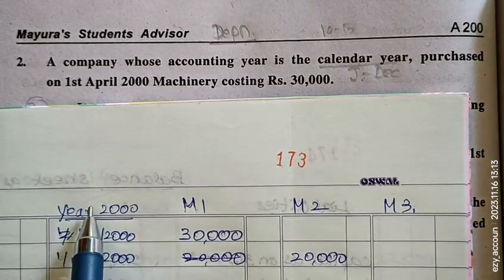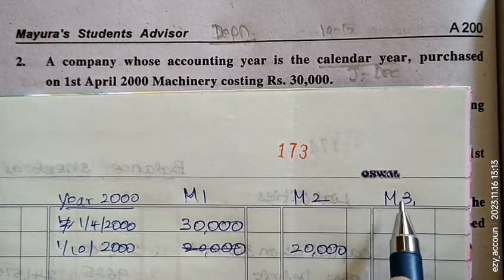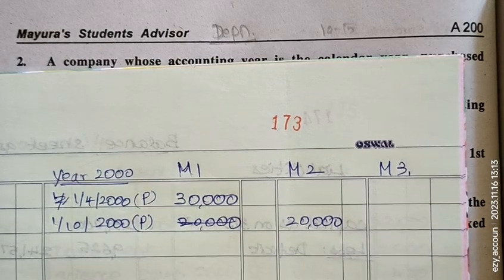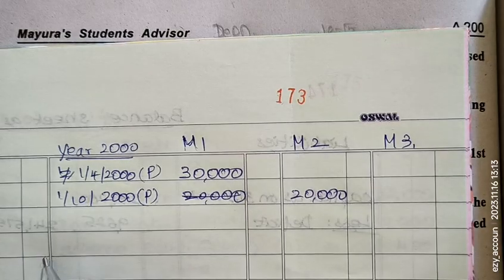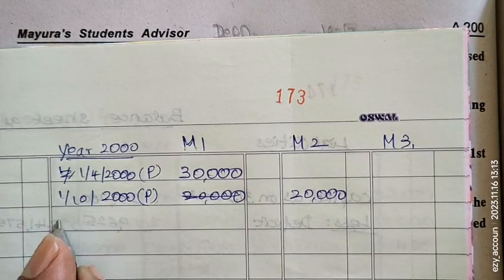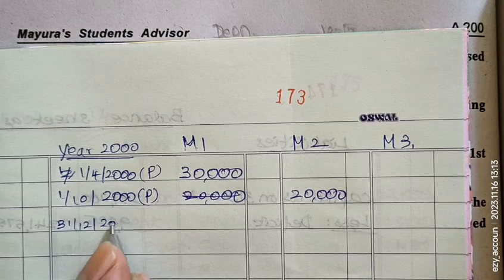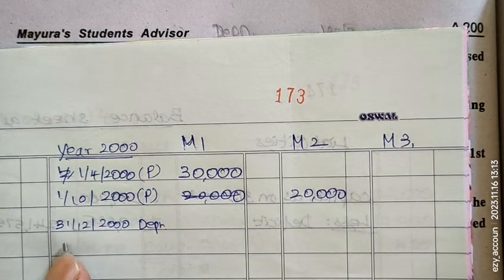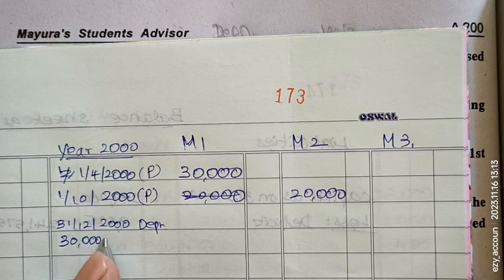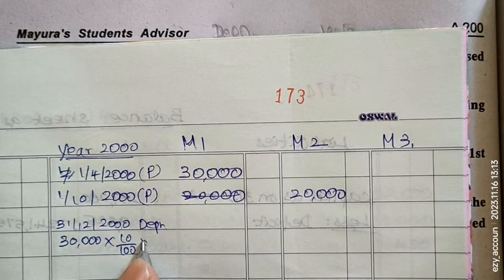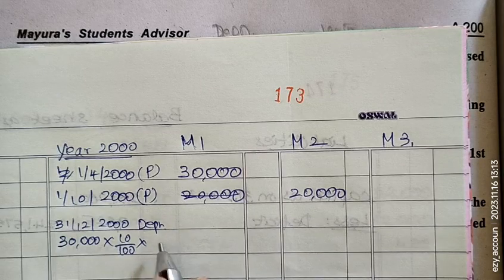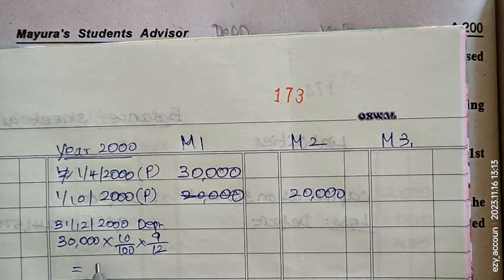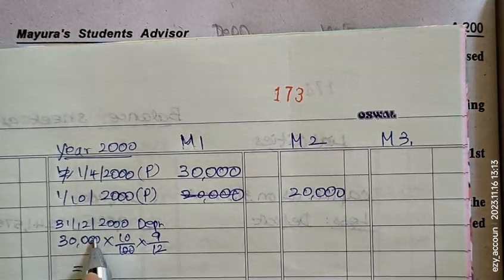In the table, the first year date is set up with three machines listed. For the depreciation on 31st December 2000, Machine 1 costs 30,000 at 10% rate. For Machine 1, purchased on 1st April, there are 9 months remaining — April, May, June, July, August, September, October, November, December — so we calculate 9 by 12.